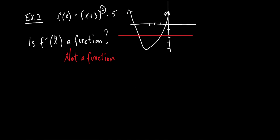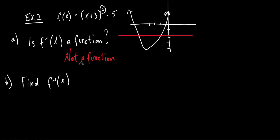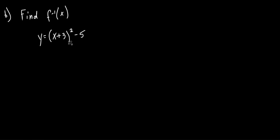Now we're actually going to find out what the inverse of this function is. So they're going to ask you — this is part B — to find the inverse of the function. How do we do that? We learned this yesterday. How do we find the inverse? Instead of f of x, I'm going to write y equals x plus 3, squared, minus 5. To find the inverse, we solve for x first. What's the first thing we do? Add 5 to both sides.